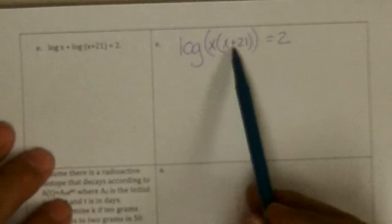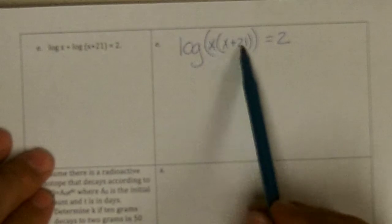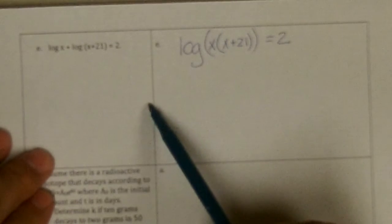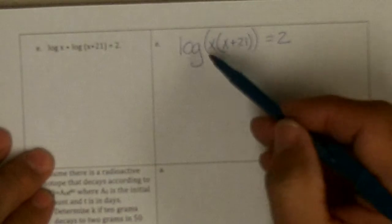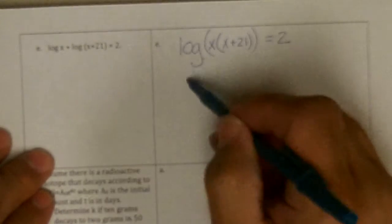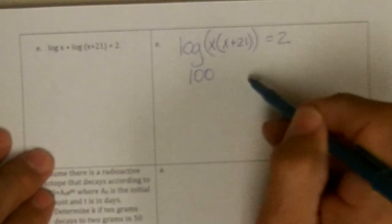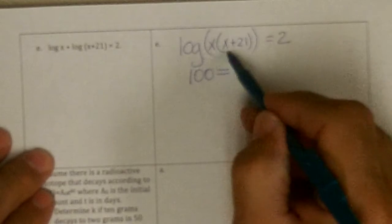Now I have a single log equation with the x's in the log, so I rewrite it as a power. Understood base 10, so 10 to the 2, which is 100, is going to equal this.